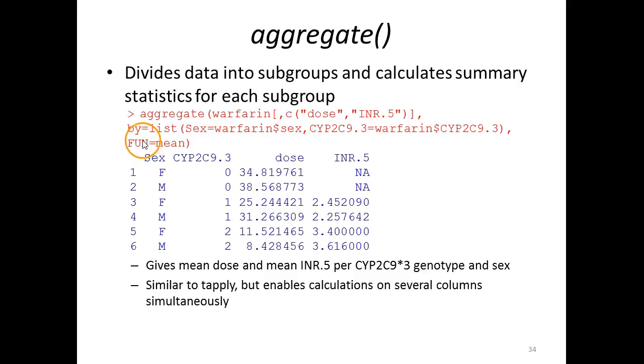Lastly, we provide the argument fun, which stands for function, and it should be in capital letters here, equals mean, meaning that we're interested in the arithmetic mean. What we get in return is two columns, and this is the point of providing the names of the columns, because otherwise it would have been empty here. But now we see that this is the sex column, this is the CYP2C9 dot 3 column.